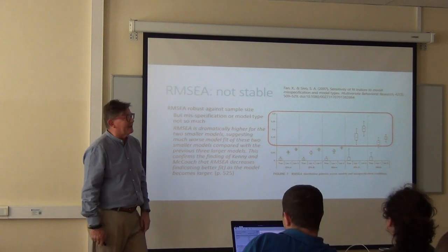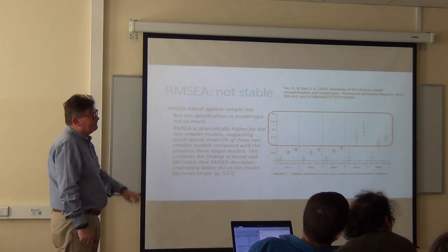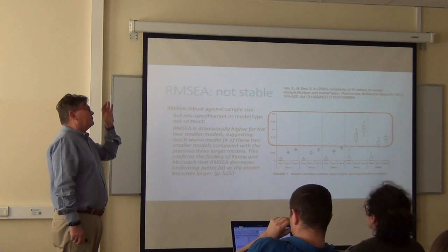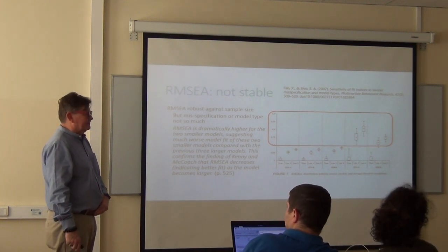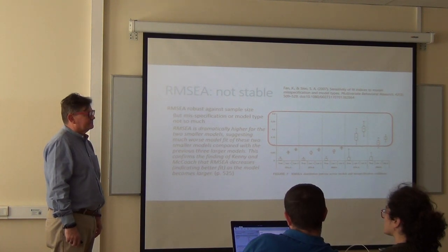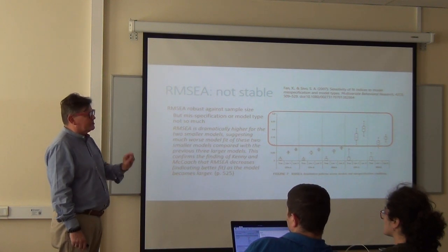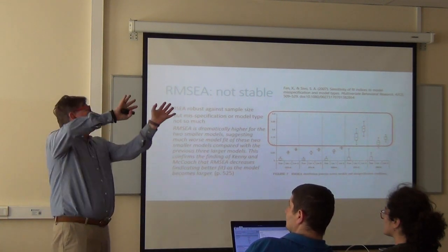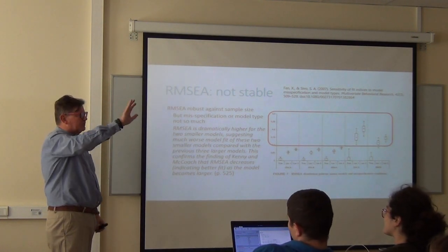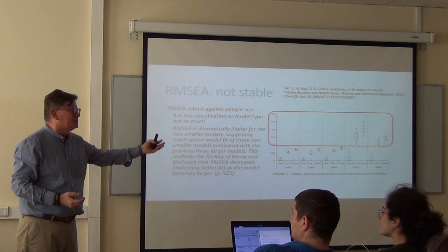We've already seen that the Chi-square indicator is not stable, and now you can see that the RMSEA is not stable. So the fundamental is you must report all the major fit indices. If one is bad and we know it's problematic due to model conditions, but others are good, then you make a case of the exception, not the rule. If that one's bad but we know it's problematic, and this one's good and this one's good, then you make that case.